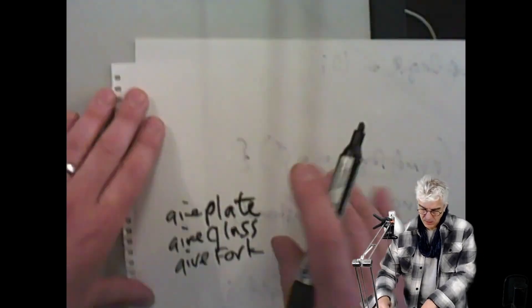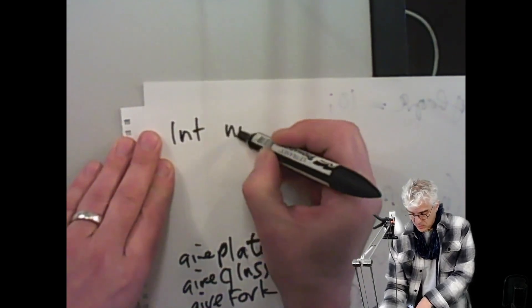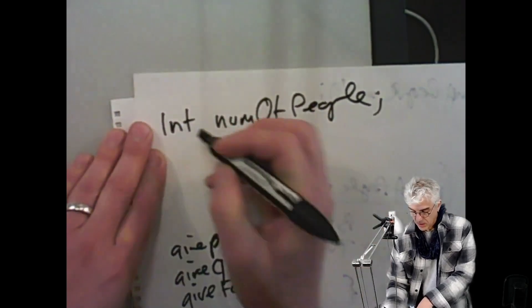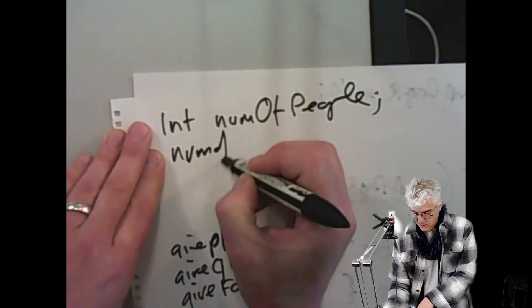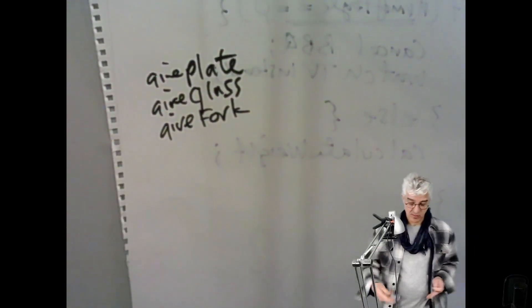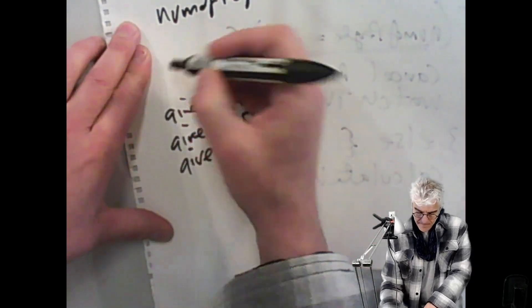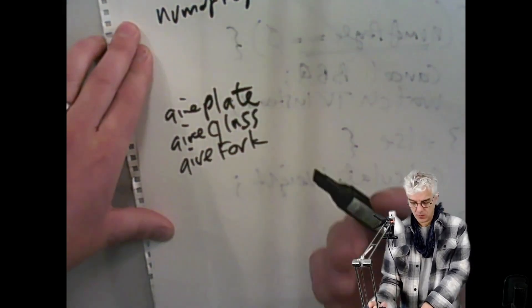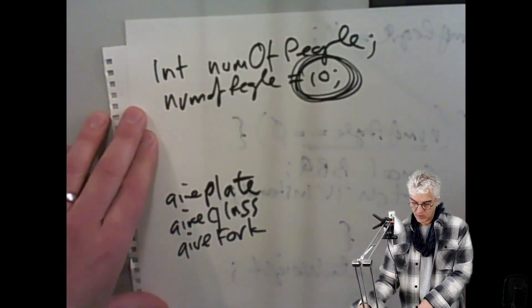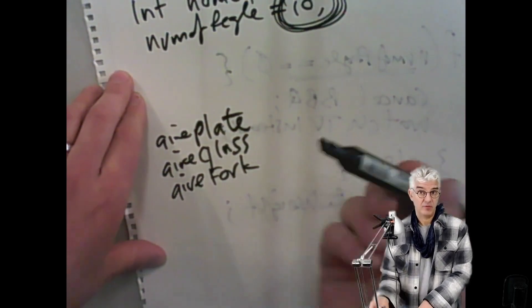I could have a list of the number of people, an integer, coming, and I've set that to be 10. So I want to, 10 times, give somebody a plate, give them a glass, and give them a fork. What I could do is say, let's count through up to our number of people. So we need to count 10 times, going through a loop, giving them a plate, giving them a glass, giving them a fork.